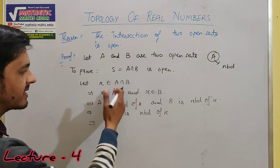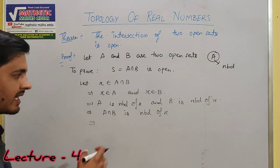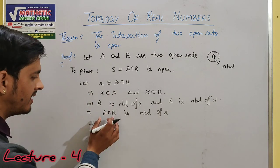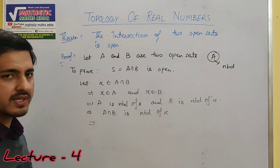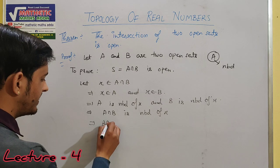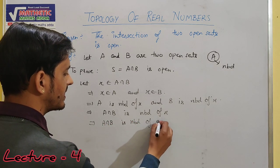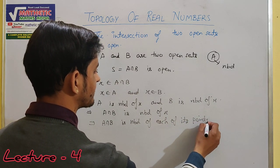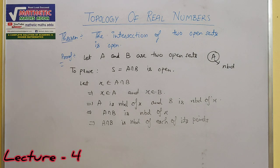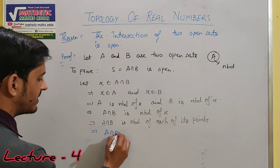अब देखिए — x एक general point था। x की जगह उन सारे points के लिए यही neighborhood वाली condition काम कर रही है। It means A intersection B is neighborhood of each of its points। अगर कोई भी set अपने हर एक point का neighborhood हो जाए तो उस set को हम open set बोलते हैं। It means A intersection B is open।